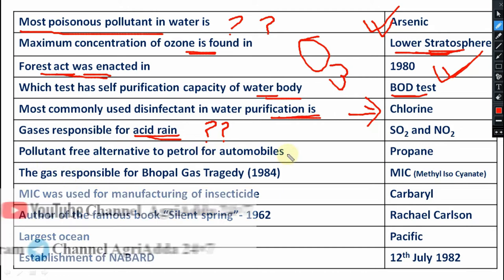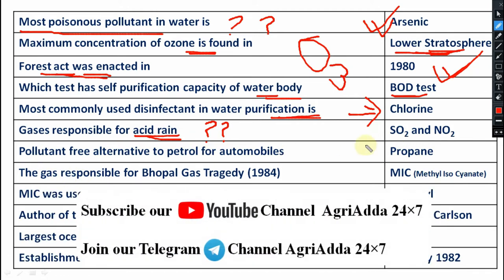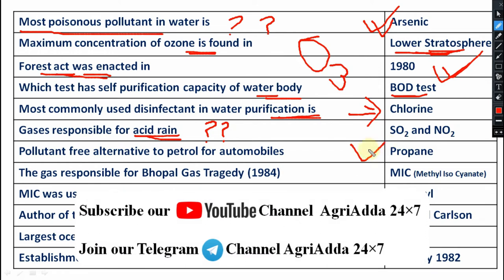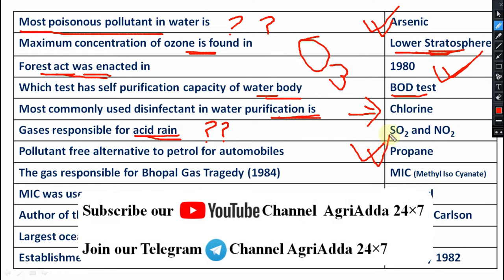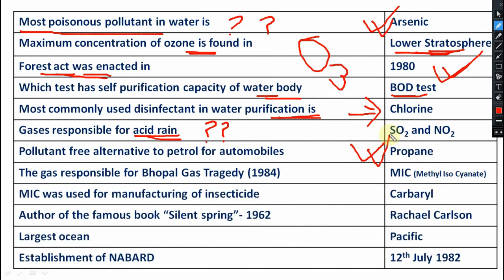Next one: pollutant-free alternative to petrol for automobiles — that is your propane. Propane is the alternative to petrol for automobiles.